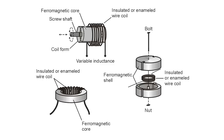One of the disadvantages and limitations of the toroid is that it's a lot harder to continuously vary the inductance. You can vary it with taps in increments, but continuously is much more difficult.